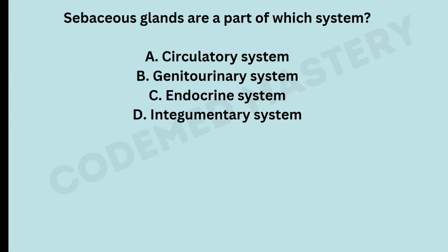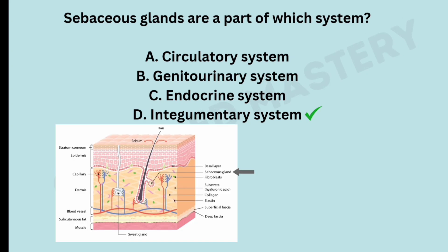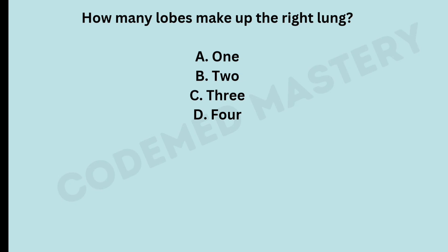Sebaceous glands are a part of which system? Option A: circulatory system. Option B: genitourinary system. Option C: endocrine system. Option D: integumentary system. The right answer is option D, integumentary. Sebaceous glands are located in the skin and are responsible for secreting sebum, an oily substance that helps keep the skin and hair moisturized and protected.